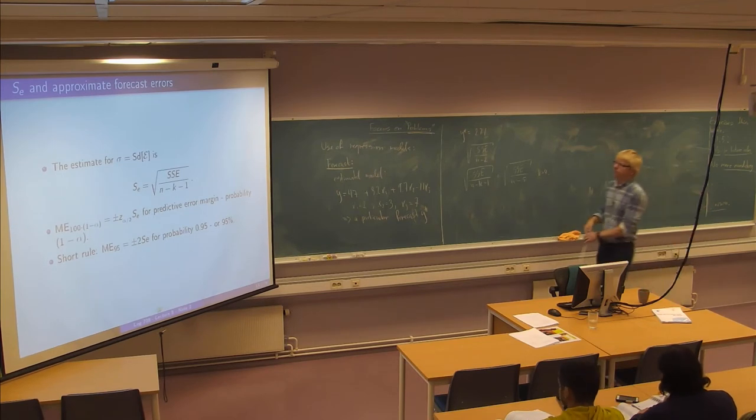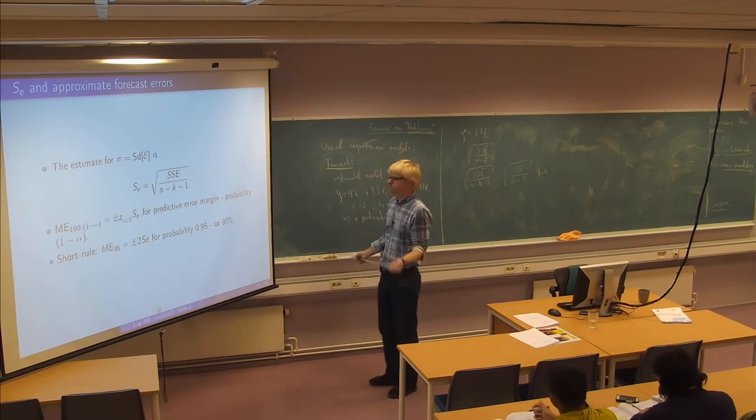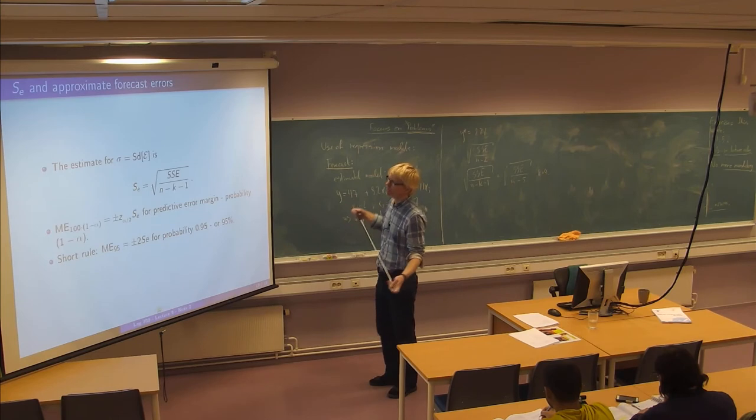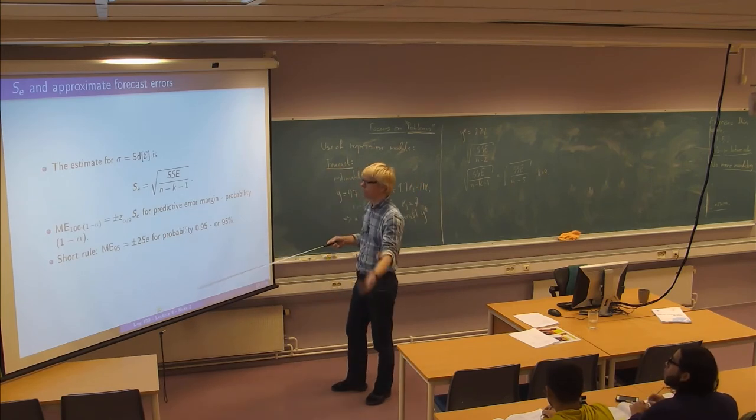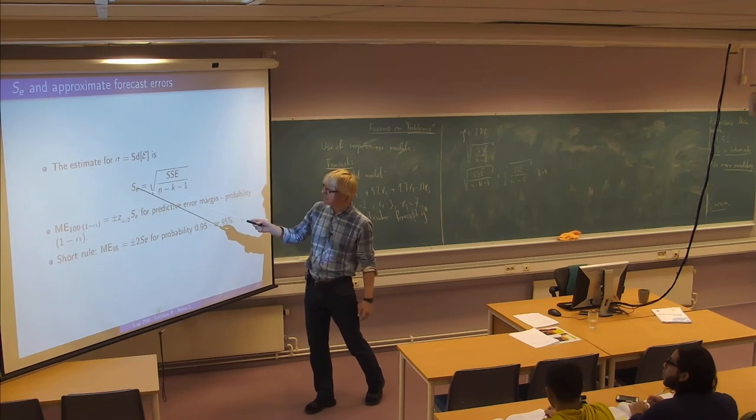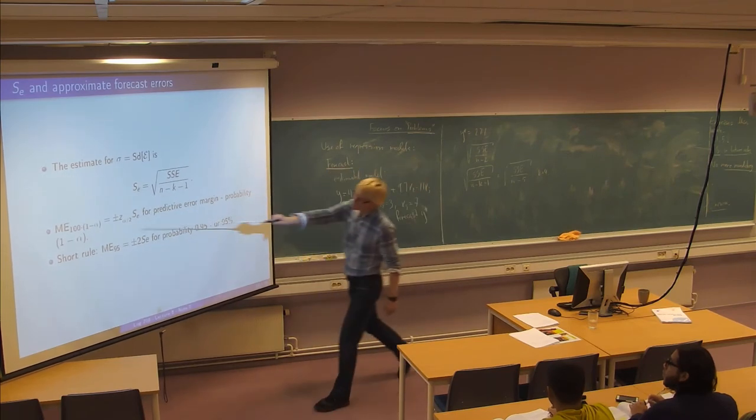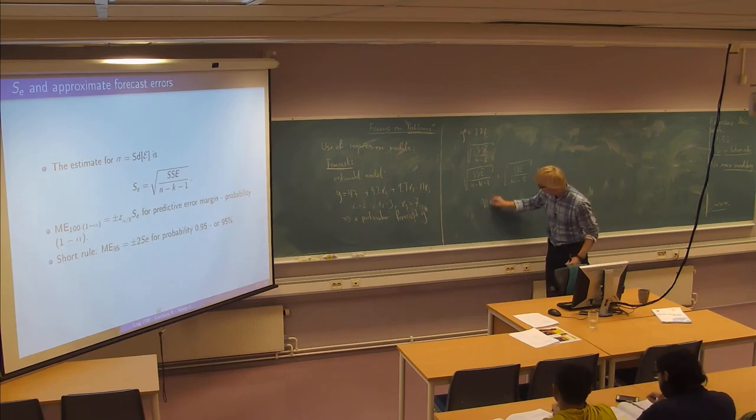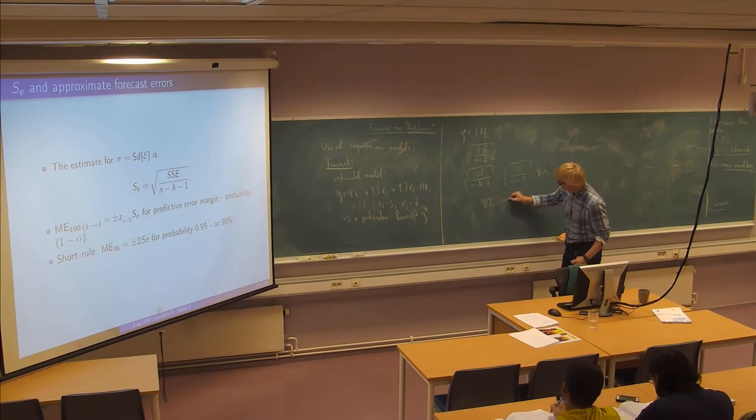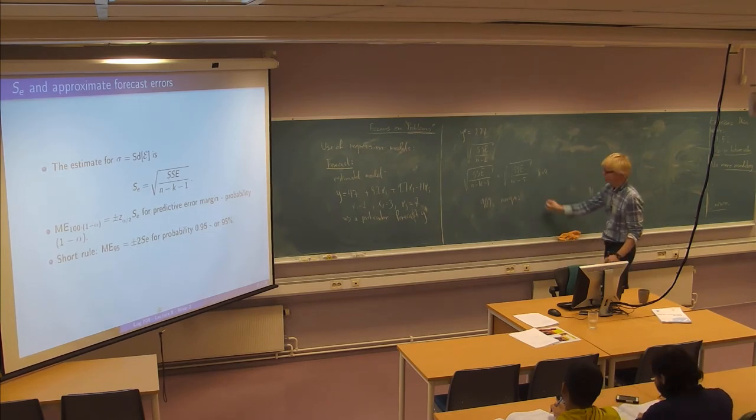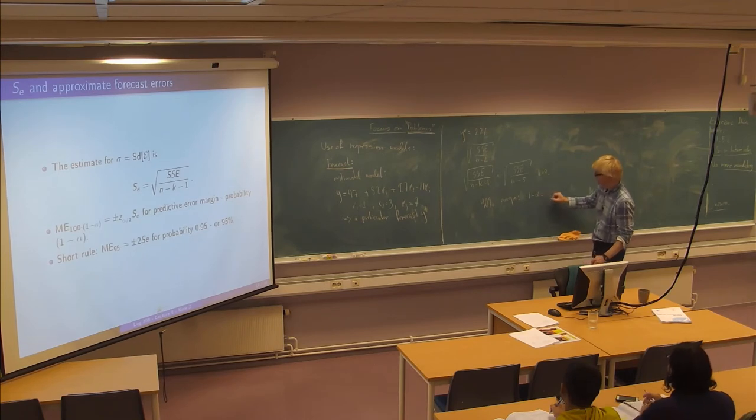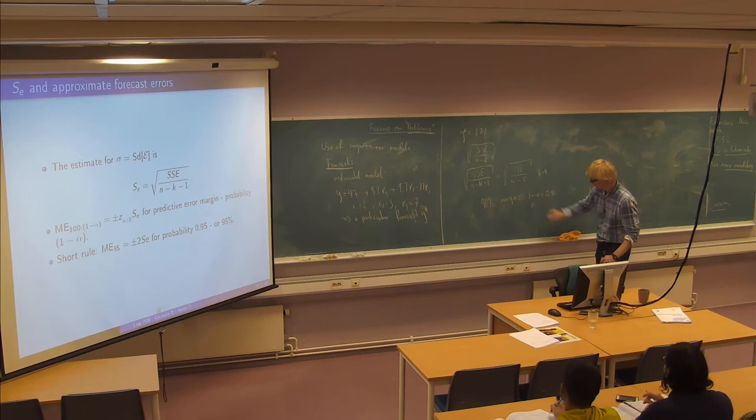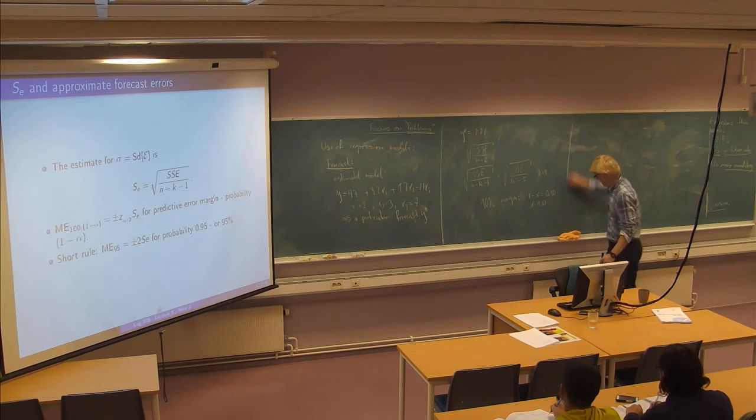And k always is the number of x variables. So if you have like four x variables, you get SSE over n minus 5. So it's just a modification again of the previous formula. And supposing our sample is not too small, we would just use as a rule of thumb z alpha half times this estimate as 1 minus alpha forecast error.